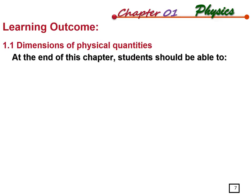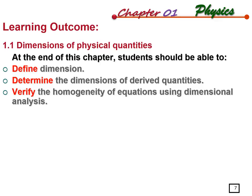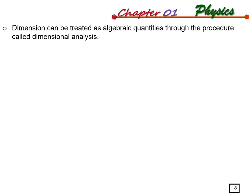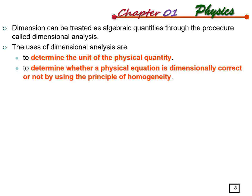Now I will cover dimension of physical quantities. You should be able to define dimension, determine the dimension of a derived quantity, and verify homogeneity using dimensional analysis. Dimensions can be treated as algebraic quantities through a procedure called dimensional analysis. We can use it to determine units and to check whether a physical equation is dimensionally correct.